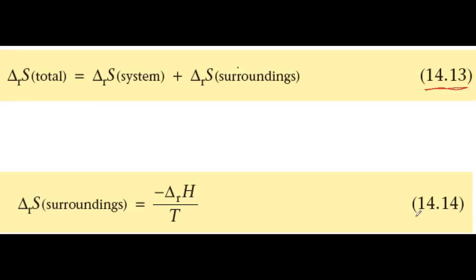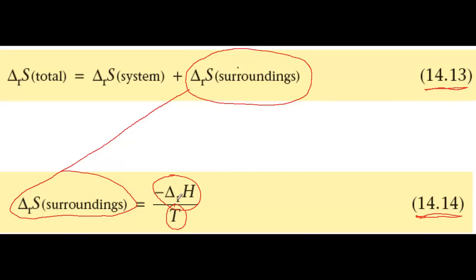Fortunately, there's a simple equation that we can use to calculate delta S surroundings, and so you can see we have a link between equation 14.13 and equation 14.14, which gives a simple way to calculate delta S surroundings. And it's equal to minus the enthalpy change of reaction, delta H_R, divided by the temperature at which the reaction takes place.